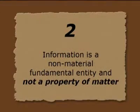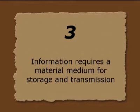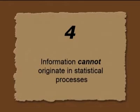The second one: information is a non-material fundamental entity and not a property of matter. In many books nowadays, you find the idea that information is a part of matter — that is a wrong idea. The third one is: information requires a material medium for storage and transmission. The fourth one is: information cannot originate in statistical processes.